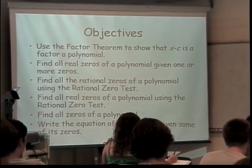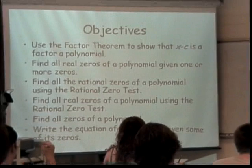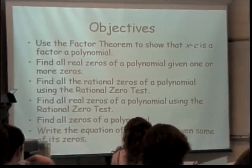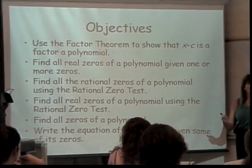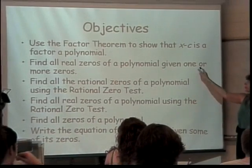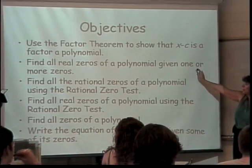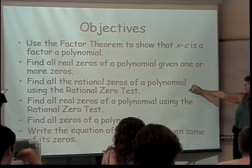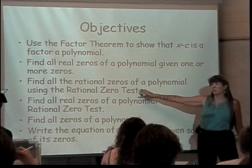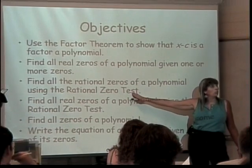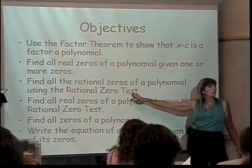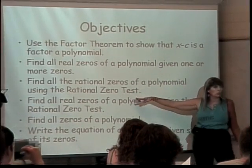We're going to use the factor theorem to show that x minus c is the factor of a polynomial. We're not really using the factor theorem, we're going to divide and prove that it's true. We're going to find real zeros of polynomials if we're given some of them. We're going to find rational zeros of polynomials, and we're not really going to use the rational root test. We're going to talk about how you can use the rational root test to determine if what you're looking at is a reasonable answer or not.